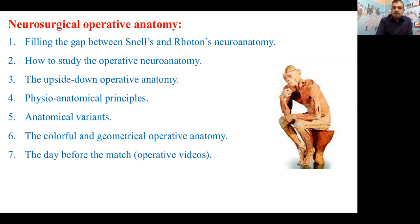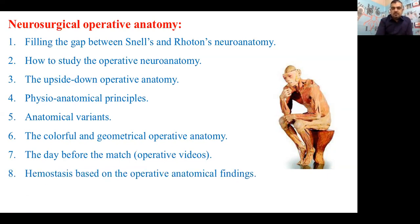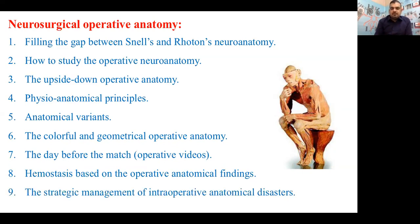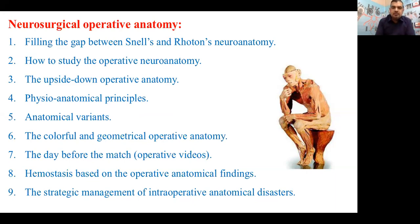Fourth is the physio-anatomical principle. Fifth is anatomical variance and association. Sixth is the colorful and geometrical operative anatomy — an interesting and new topic. Seventh is the day before surgery — what to practice. Eighth is hemostasis based on operative anatomical findings, discussed specifically based on anatomy rather than as a general principle. And finally, the ninth is the strategic management of intraoperative anatomical disaster — when disaster occurs due to lack of anatomical knowledge. Those are the headlines of the next nine lectures.